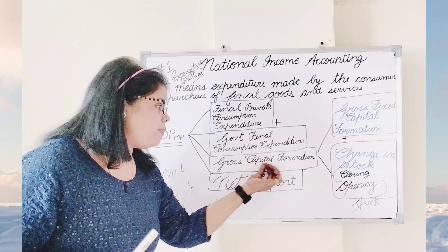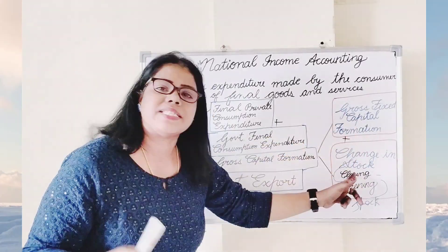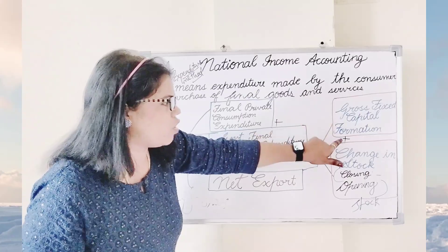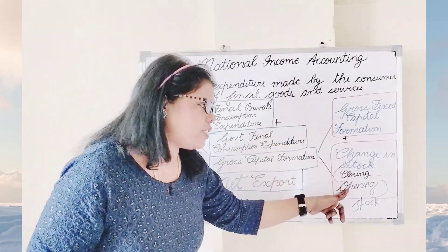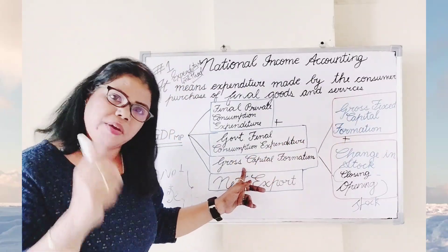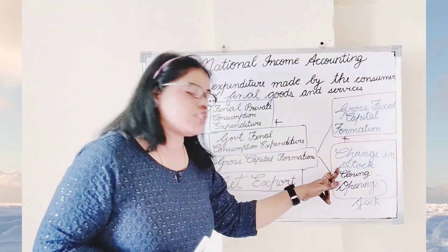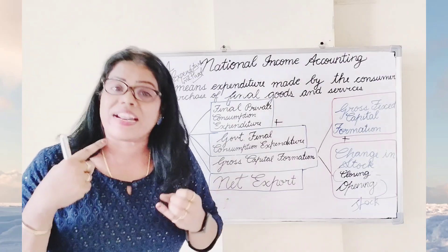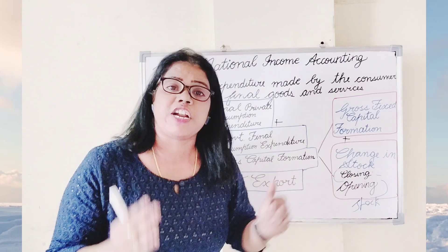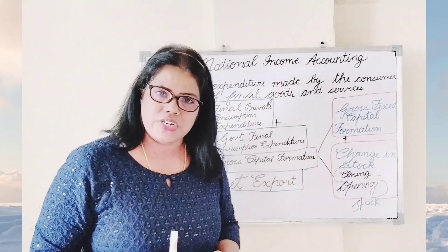Gross capital formation has two components. After adding these two elements collectively, you will get gross capital formation. Whenever gross capital formation is not given but gross fixed capital formation and change in stock are given, add both to get gross capital formation. Gross fixed capital formation plus change in stock — change in stock means inventory stock, or closing stock minus opening stock. The difference between closing stock and opening stock gives you inventory stock, otherwise called change in stock.